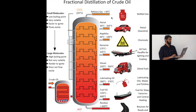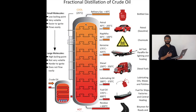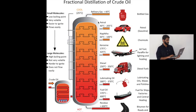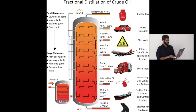We get refinery gas from crude distillation. We also get LPG, C2 and C3 products. That is why we get petrol, which is used in cars and bikes.